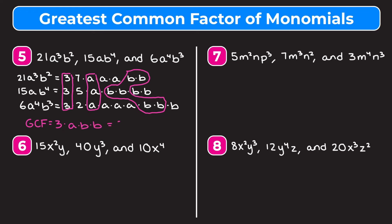So the greatest common factor is 3 times a times b times b, which equals 3ab squared. Using the shortcut: GCF of 21, 15, and 6 is 3. a shows up in every term so take the lowest exponent, which is 1 — just a. b shows up in every term so take the lowest exponent, which is 2 — giving b squared. So we get 3ab squared.